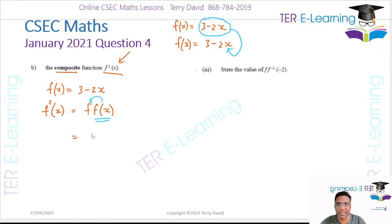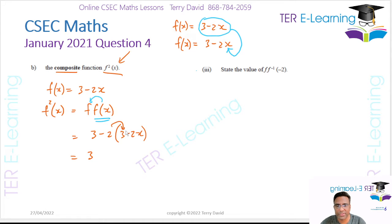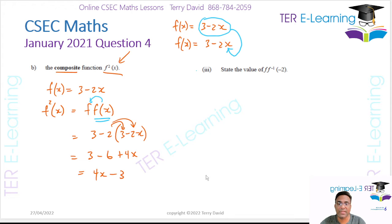So that's going to be 3 minus 2, open brackets, 3 minus 2x. This gives 3, then minus 2 by 3 gives minus 6, and minus 2 by minus 2x gives plus 4x. So 3 minus 6 is minus 3. Therefore f squared is 4x minus 3.